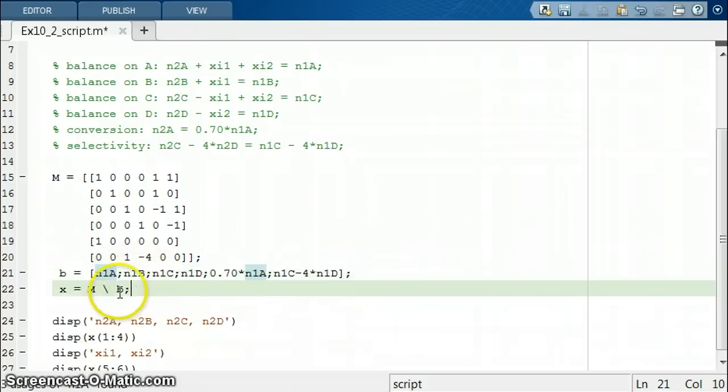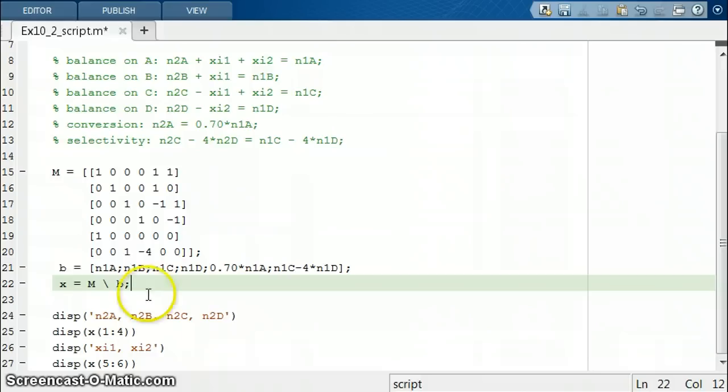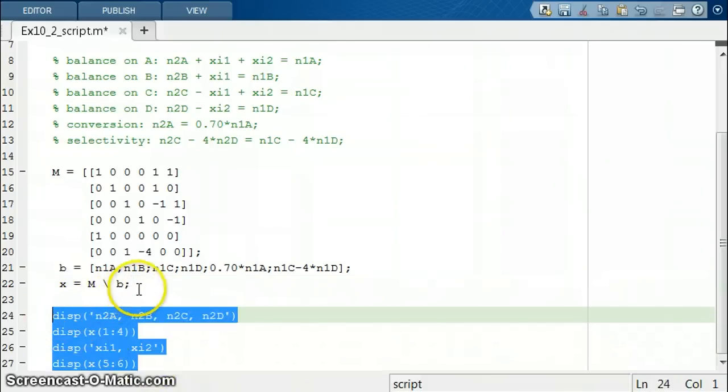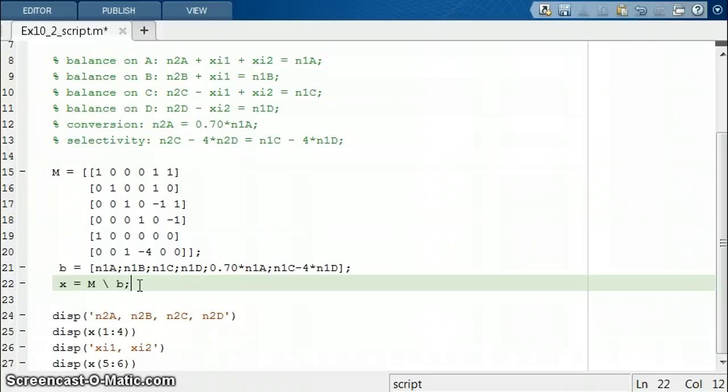And then all I have to do after I do that is write X equals M backslash B. And so this is kind of similar to saying M inverse times B, but it's a much faster and more computationally efficient way of doing that. And it's also more computationally accurate in most cases. And so once I do that, I'm going to go ahead and display these outputs as shown here using the DISP function.